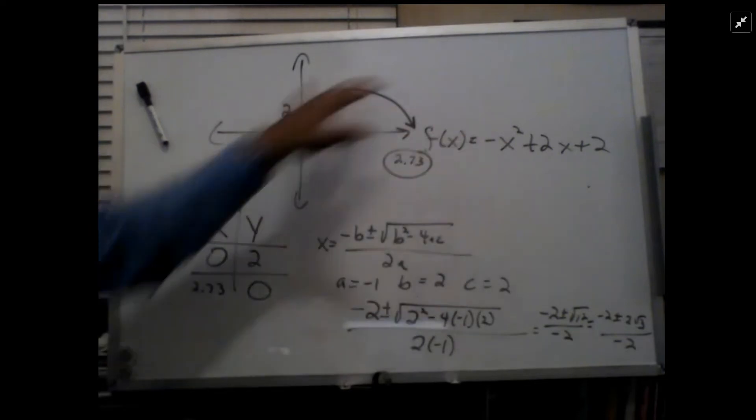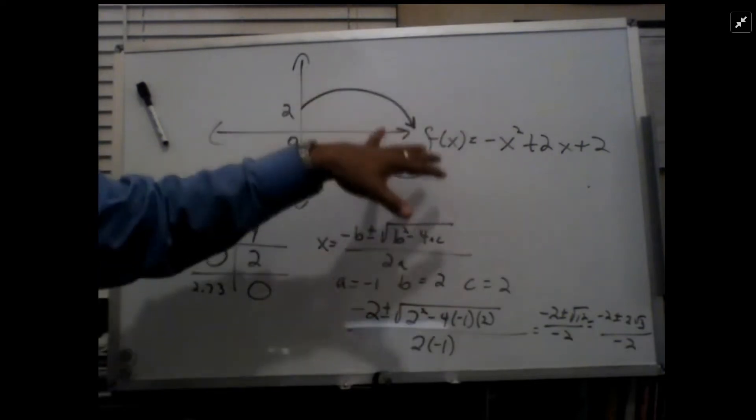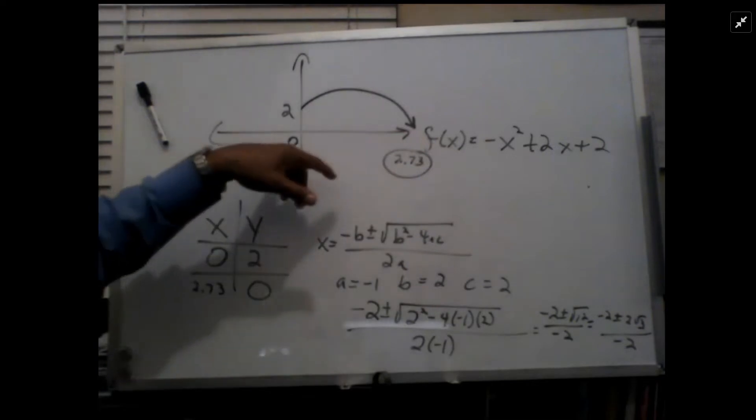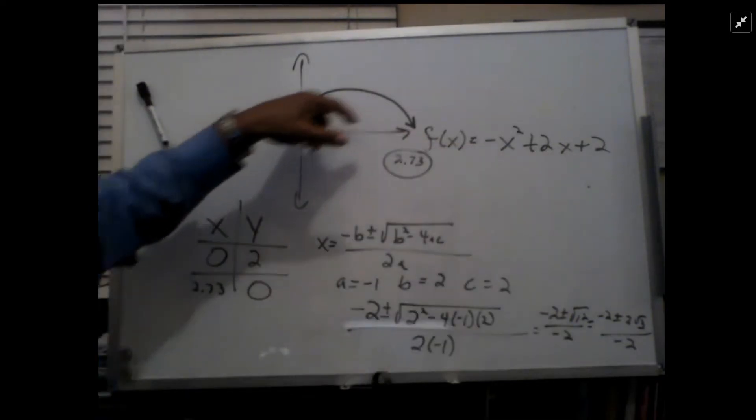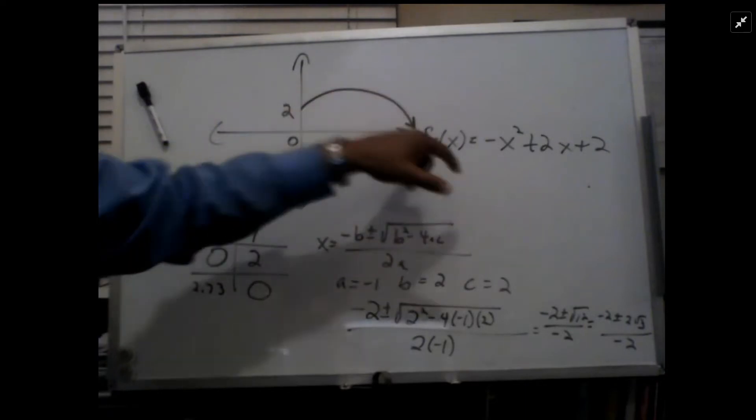Notice the negative x squared means that the parabolic arc is going downwards. It also means at x equals zero, which is the starting point, the height is already 2. So the question is how far did it go before it landed?